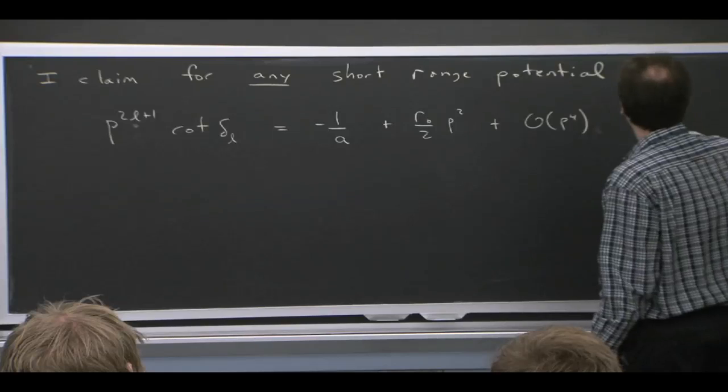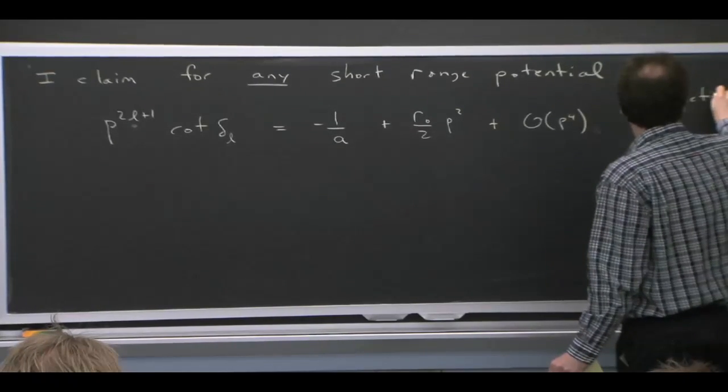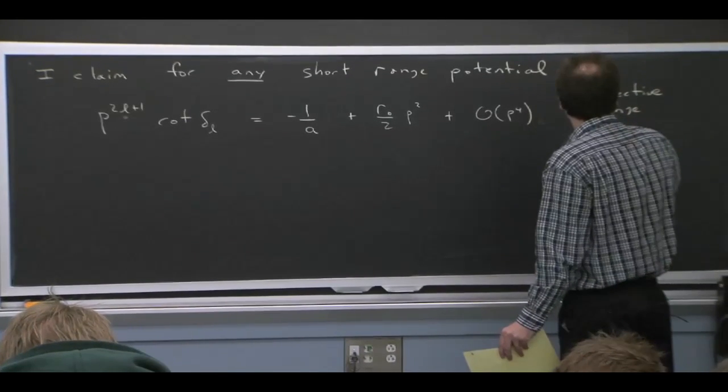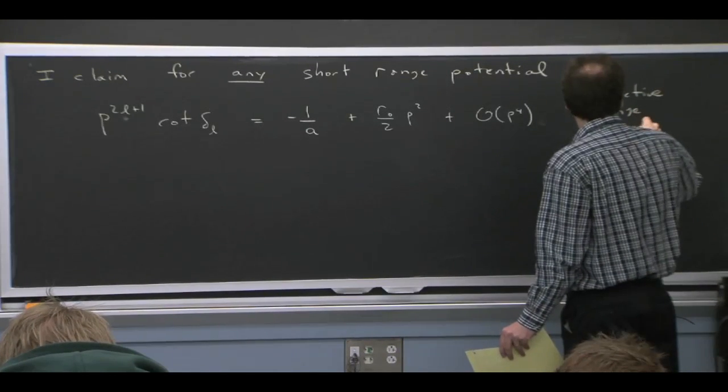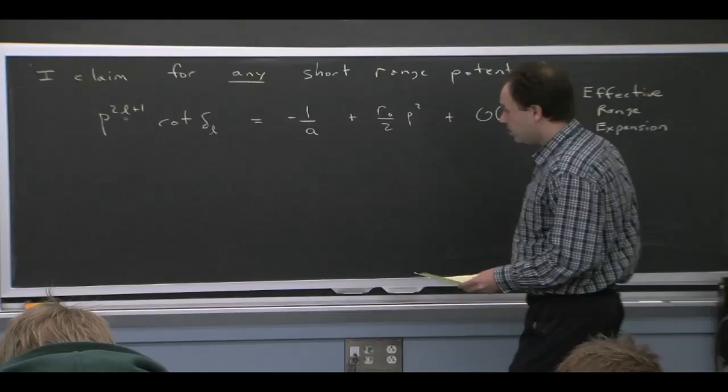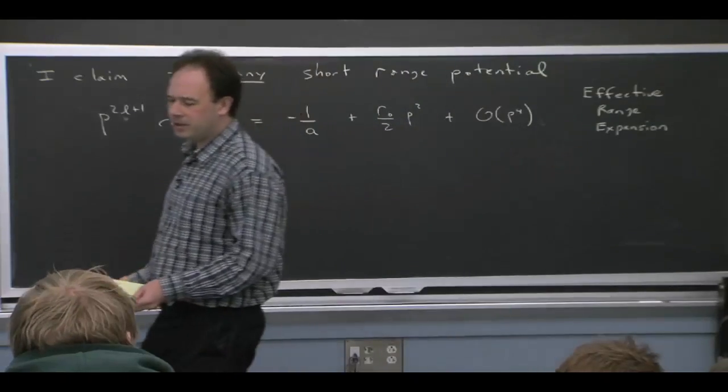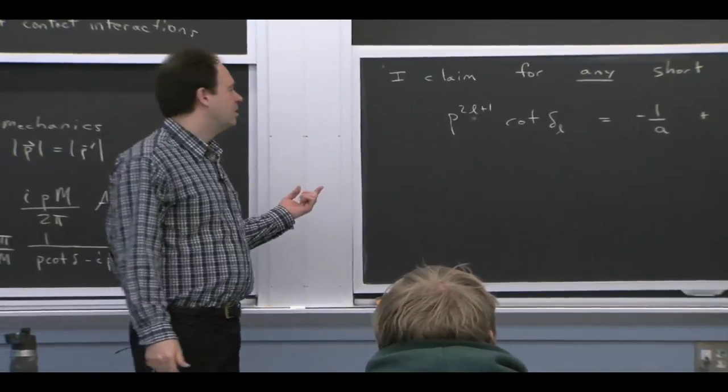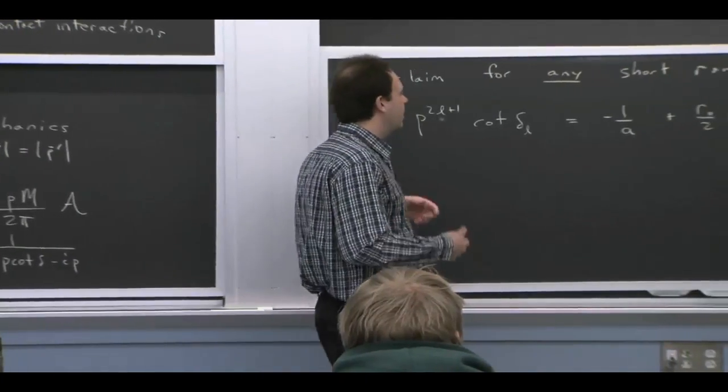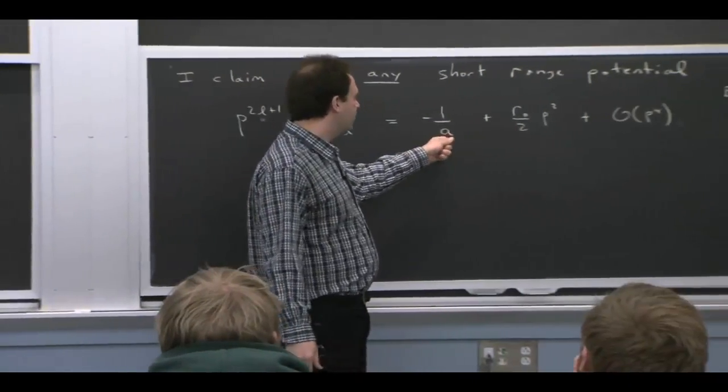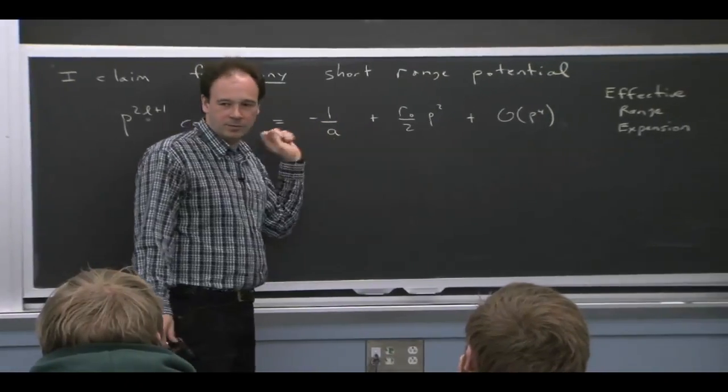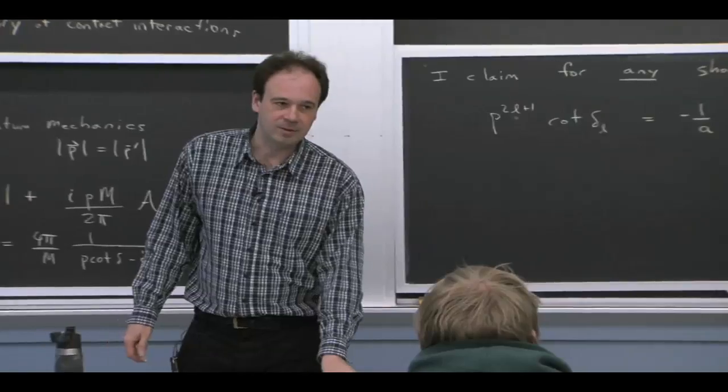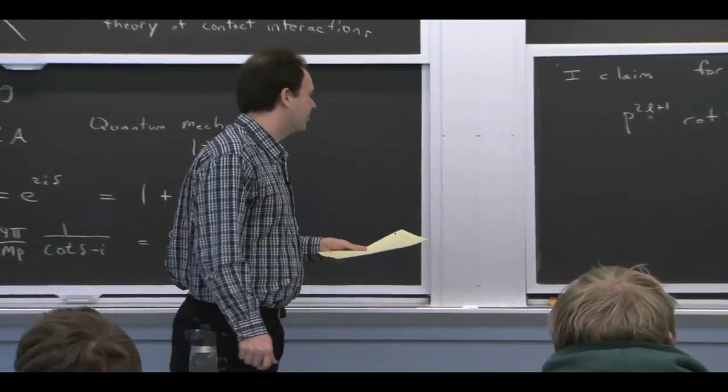And this is actually something that's quite difficult to prove in quantum mechanics, this particular fact. And it's called the effective range expansion. It's difficult to prove because when you do quantum mechanics, you pick a potential. And I'm saying that this is true for any potential. So if you start doing quantum mechanics with some potential, you've got to prove that you can put it in this form irrespective of what the choice of that potential would be. And that makes it a little bit tricky to do in quantum mechanical setup.